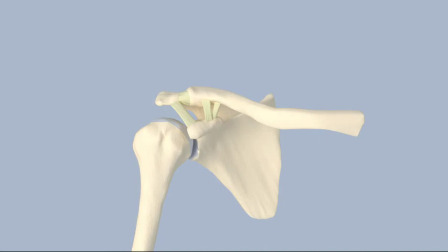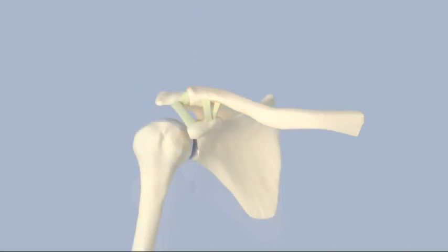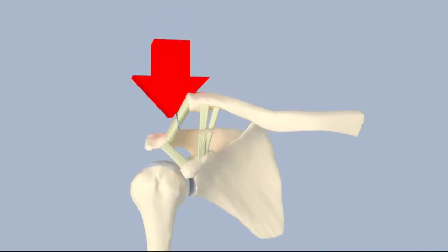Type 5 AC injuries occur when the ligaments that stabilize the acromioclavicular joint are completely torn and the deltoid and trapezius muscles are torn away from the clavicle. This injury requires surgical repair.